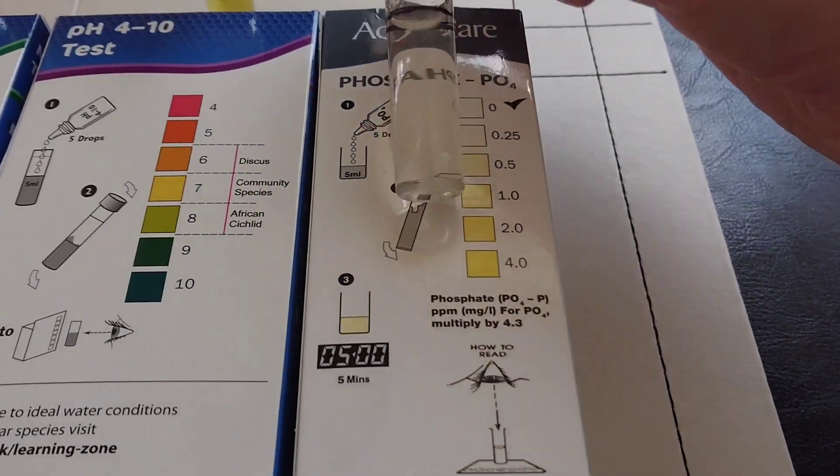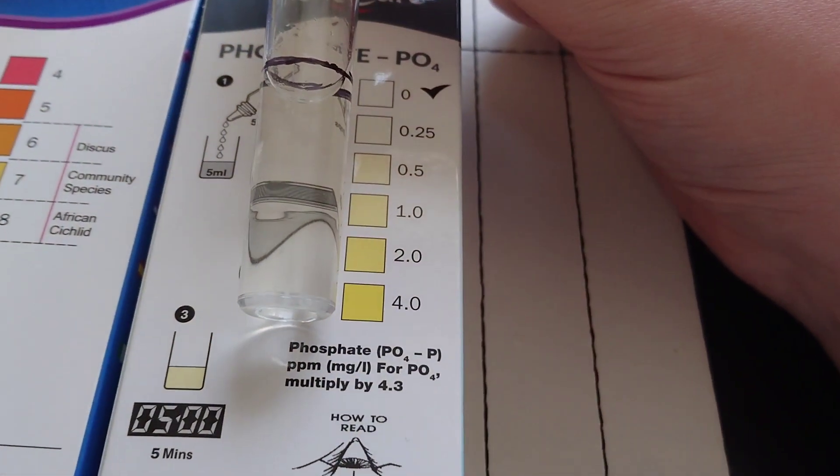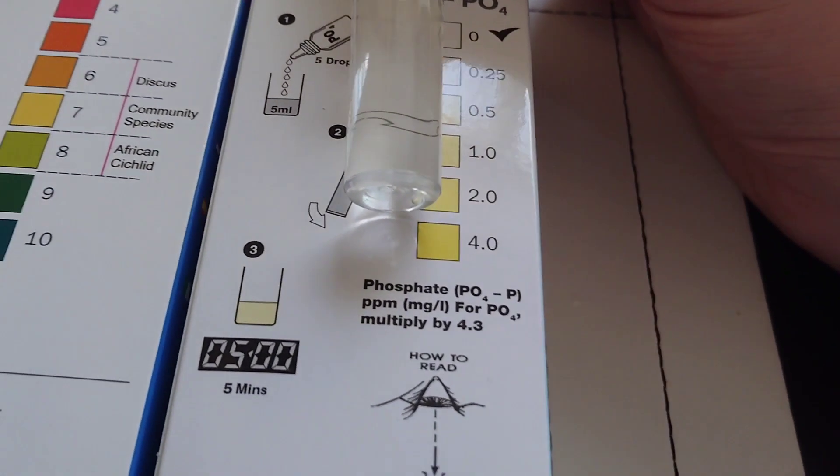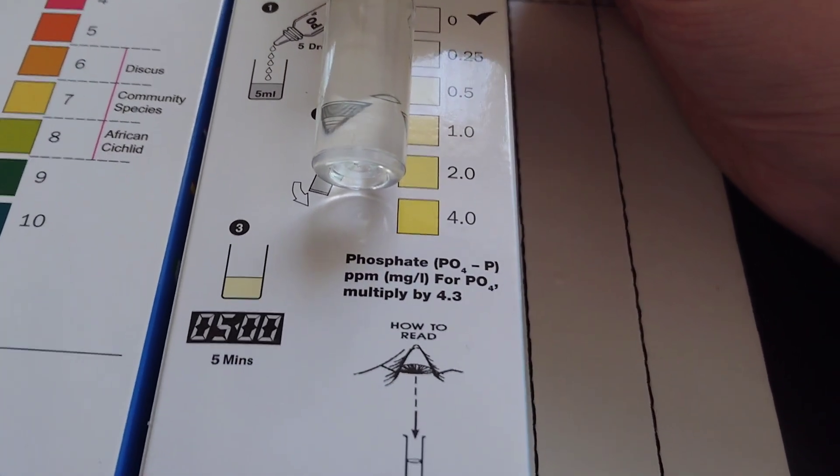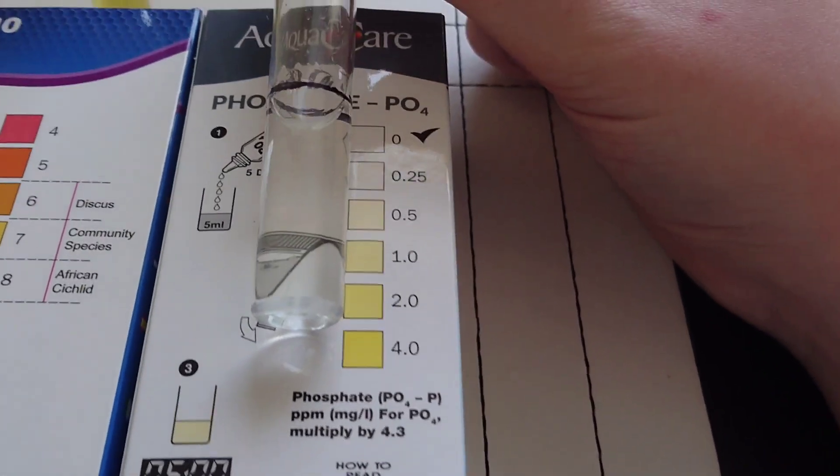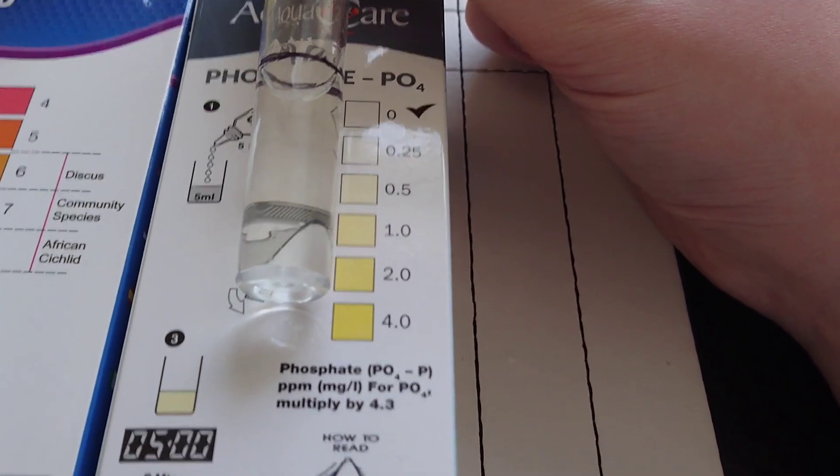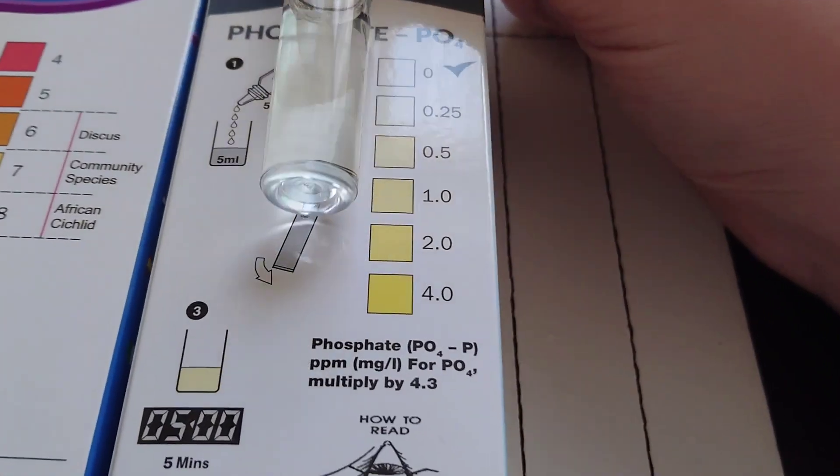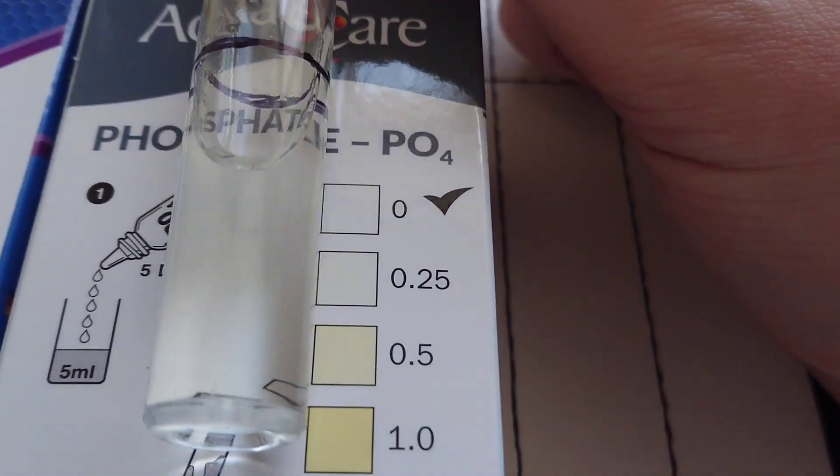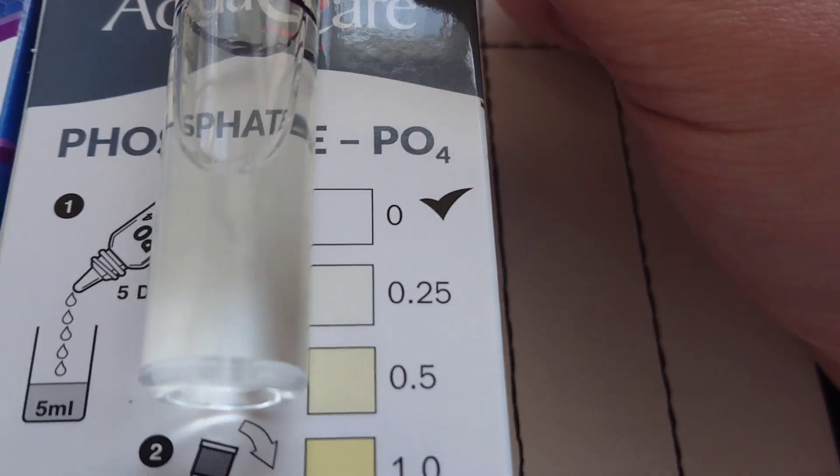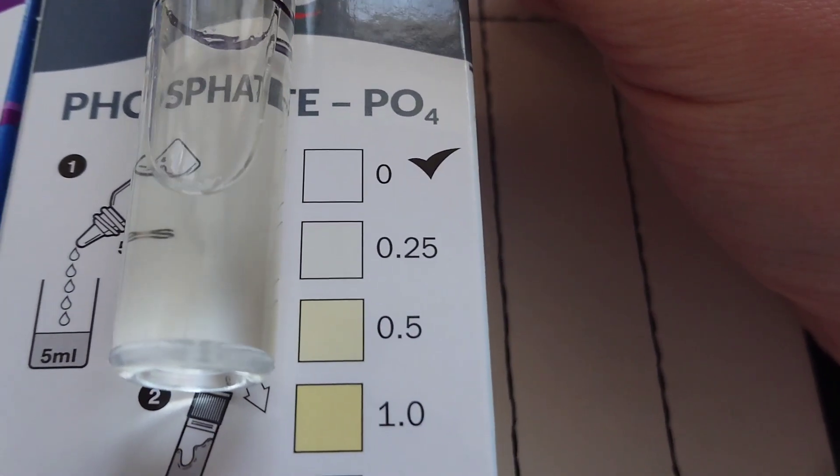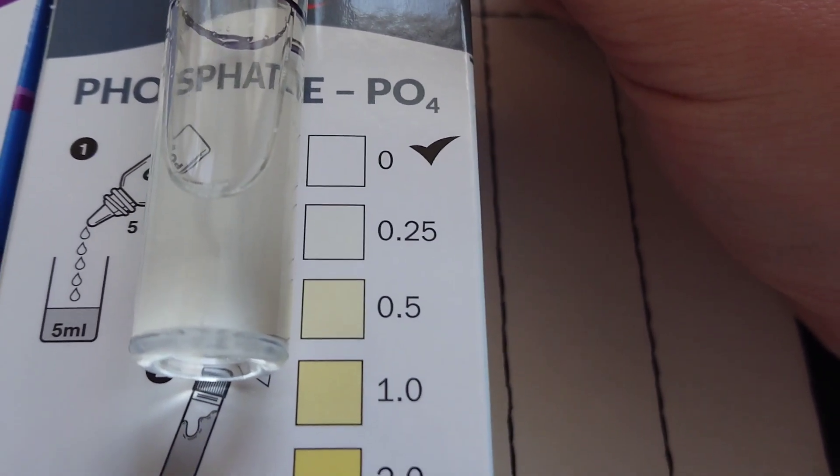And then phosphate. Phosphate's not really a big deal in a freshwater tank. All it'll do really is give algae more food to eat. But we have very low, I'd call that zero or maybe 0.25 at the most.